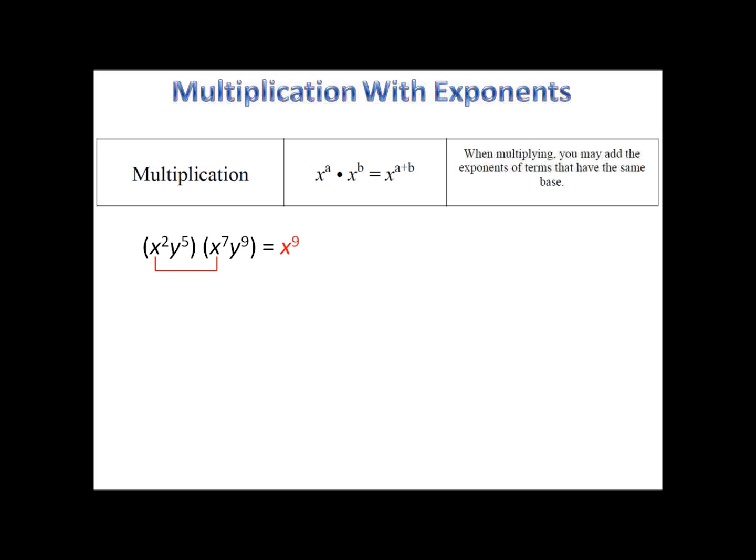For example, here we have x squared y to the fifth, x to the seventh y to the ninth. We're going to take the x's from each of the parentheses and put them together. x to the second is x times x. x to the seventh is x times itself seven times. Put those together, you have x to the ninth.